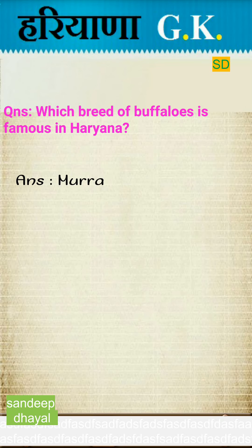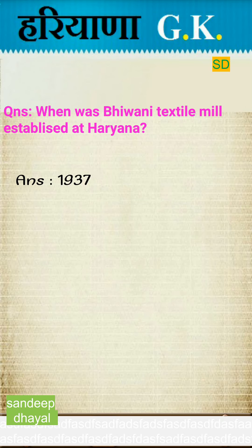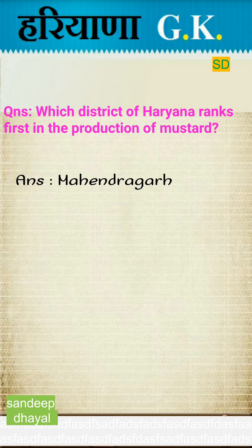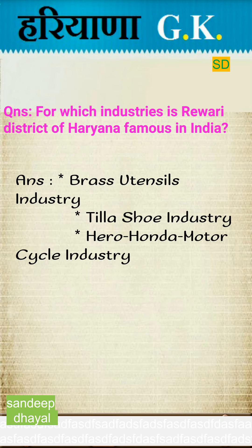Which breed of buffalo is famous in Haryana? Answer: Murrah. When was the Bhiwani Textile Mill established in Haryana? Answer: 1937. Which district of Haryana ranks first in the production of mustard? Answer: Mahendragarh. For which industry is Rewari district of Haryana famous in India? Answer: Brass utensils industry.